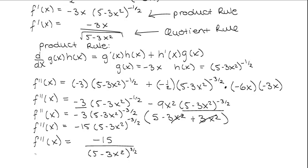So there you go — this is your final simplified answer: negative 15 divided by 5 minus 3x squared to the power of 3 over 2 on the bottom. If you didn't need to simplify, you could stop at an earlier point. All those steps were simplifying so your answer looks a little nicer. That is how you find the second higher order derivative.